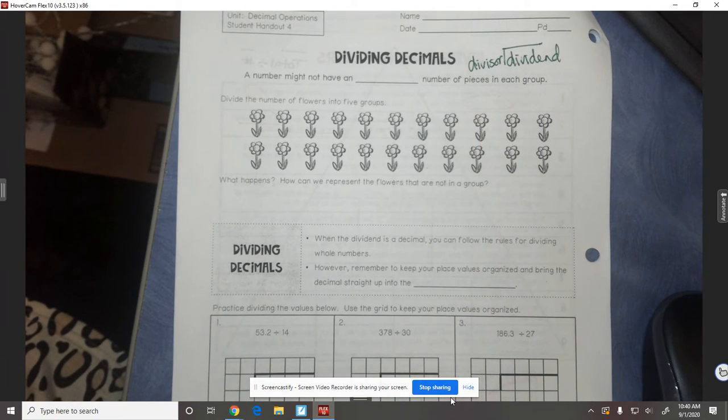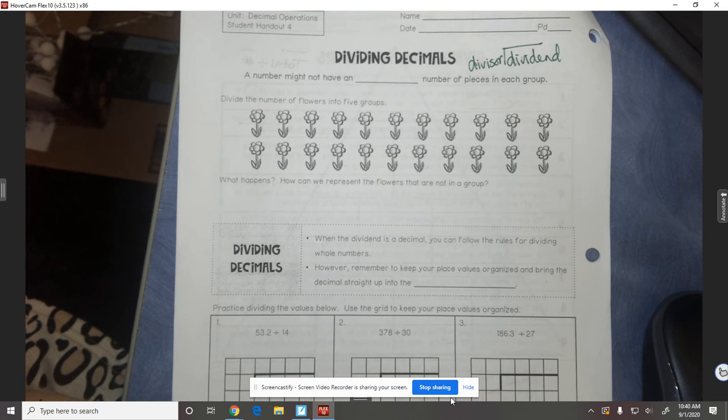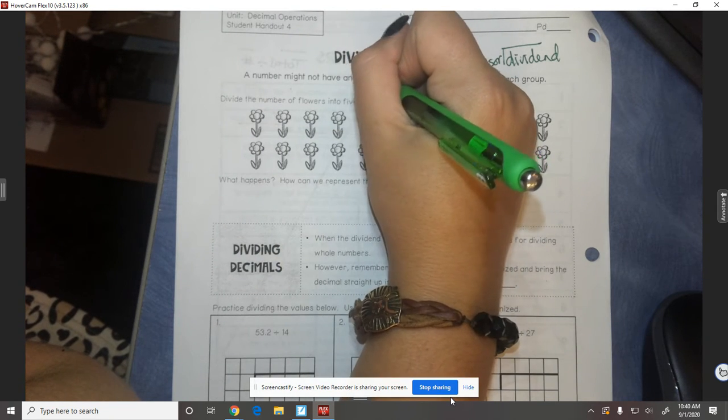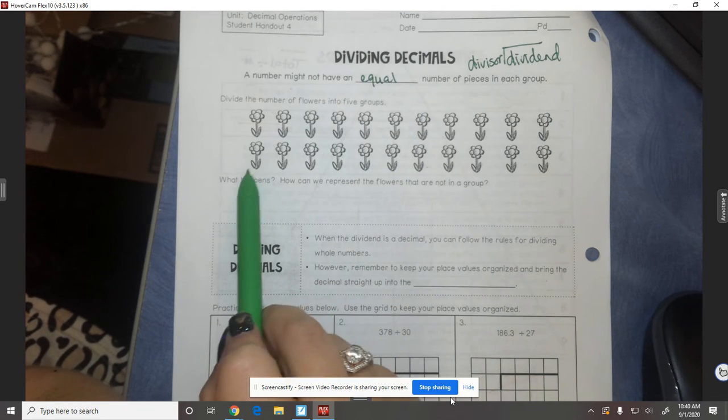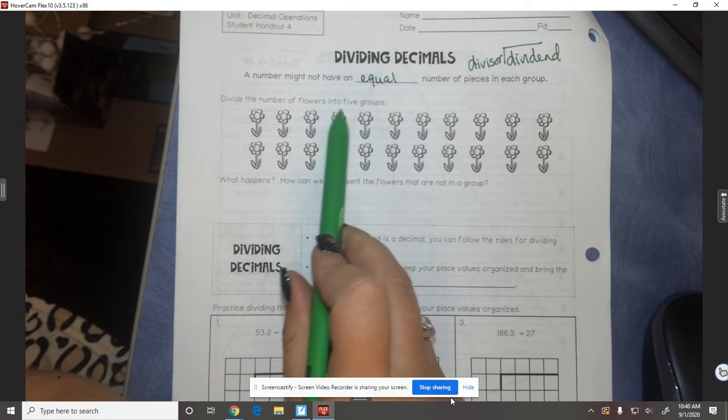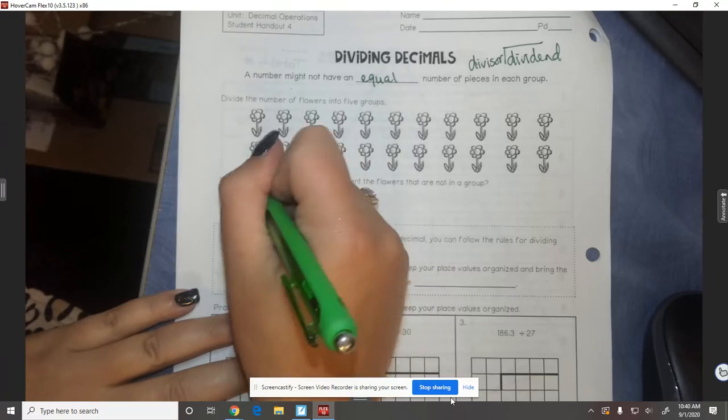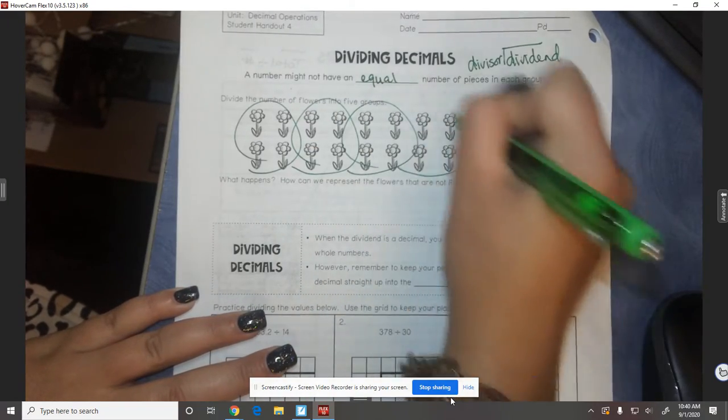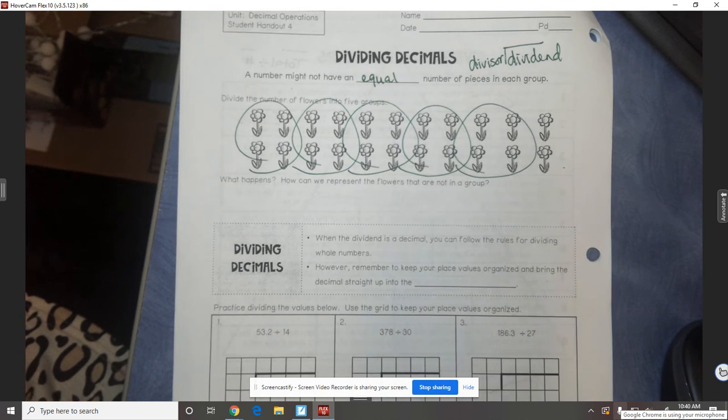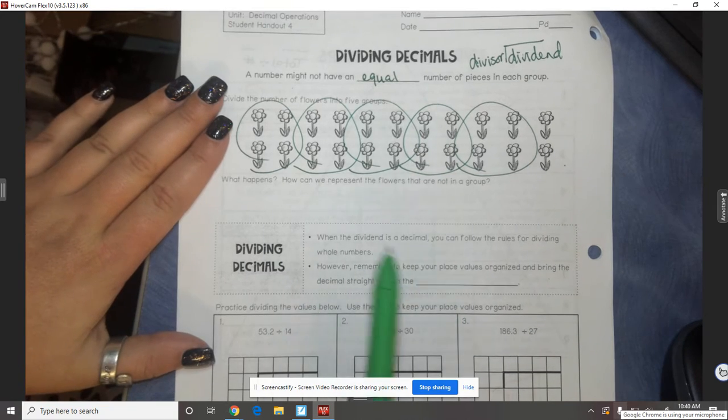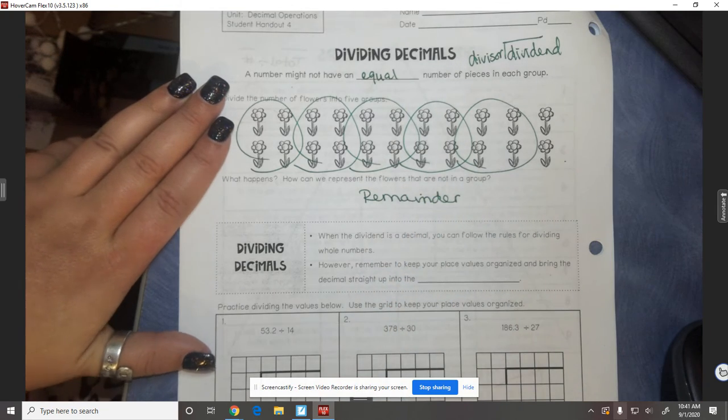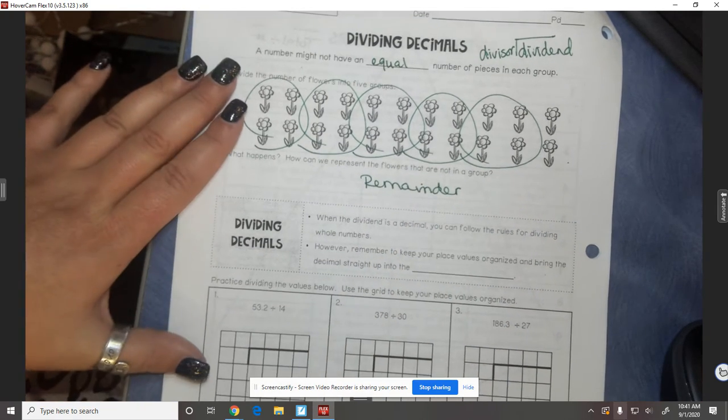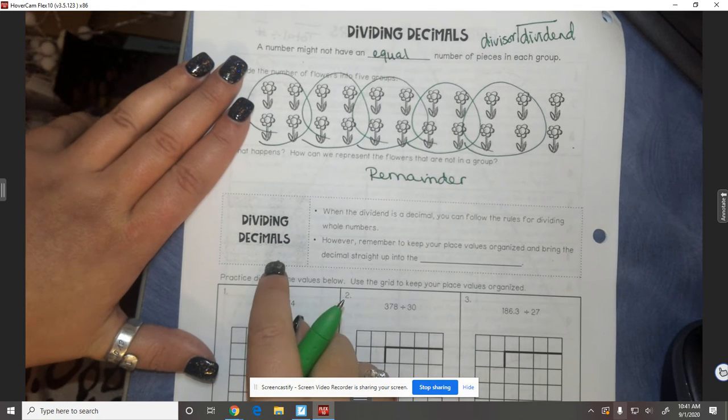So why is there a decimal sometimes? Well sometimes it's because a number might not have an equal number of pieces in each group. An example of that is we have 22 flowers right here and we're asked to put them in five groups and I can try to do that but I'm gonna have some left over. There's no way to make an equal amount of 5 groups out of 22. So what happens is we have a remainder. We have an unequal amount so we end up having a remainder. So that's when our decimals come into play.